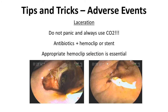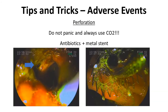Appropriate hemoclip selection is essential given the use of a duodenoscope, as some hemoclips do not work well with this scope. As perforation may occur, the use of CO2 is highly recommended. In cases of perforation, do not panic — metal stent placement and antibiotics are recommended, and the patient should be admitted for closer monitoring.